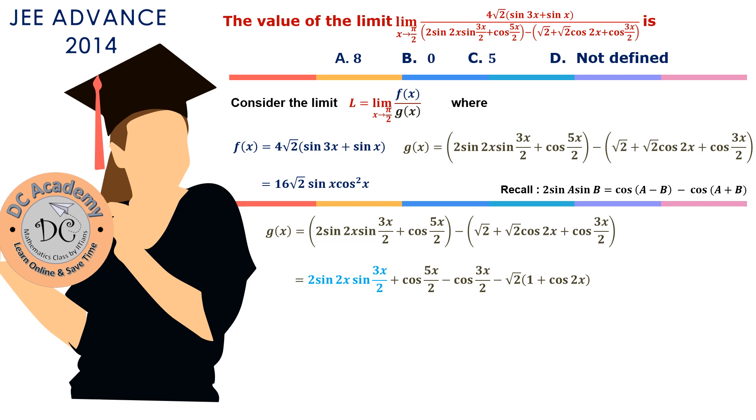We recall the formula 2 sin A sin B = cos(A-B) - cos(A+B). Therefore, this function will be written as cos((2x-3x)/2) - cos((2x+3x)/2), which gives us cos(x/2) - cos(7x/2). The cos 2x can be written as 2 cos² x - 1, and the 1s cancel. Therefore, we get 2√2 cos² x.